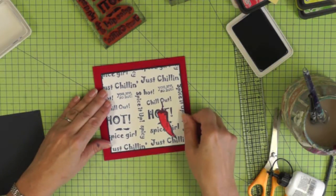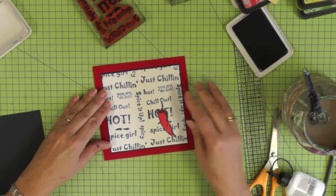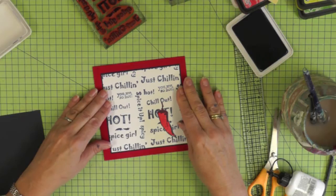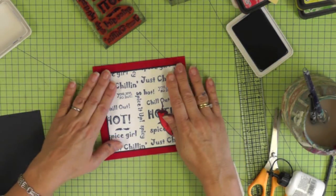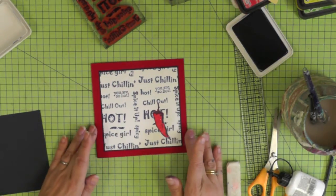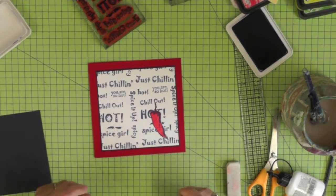Using PVA or double-sided tape you're going to attach that centrally on the front of your red card. Now if you look at this design you could quite easily do this with a yellow or an orange or a green chili pepper and just switch out that red card for a piece of card to match the color of your chili.